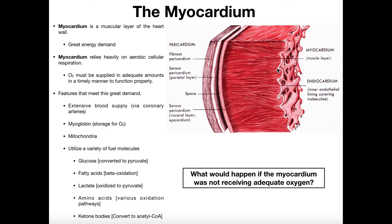Remember, 'myo' is a prefix that means muscle, so this layer is going to be a very strong muscular layer. And then superficially we have the pericardium — that's divided up further, but we'll talk about that in another video. Here we want to focus on the myocardium.